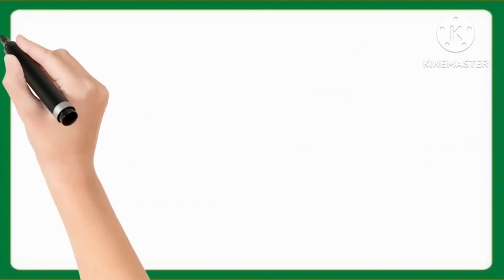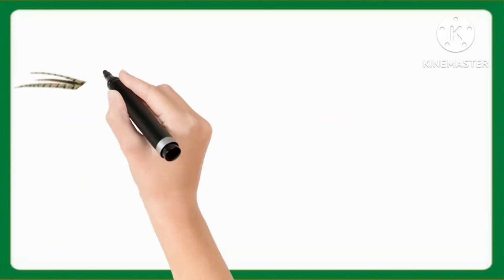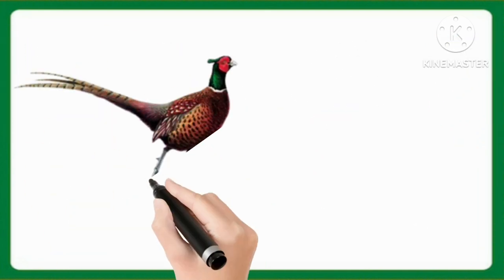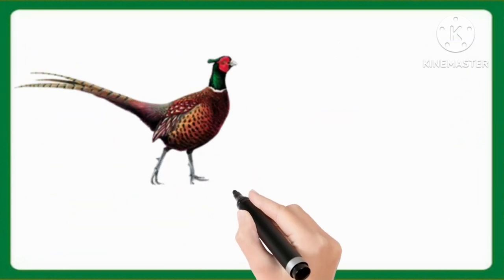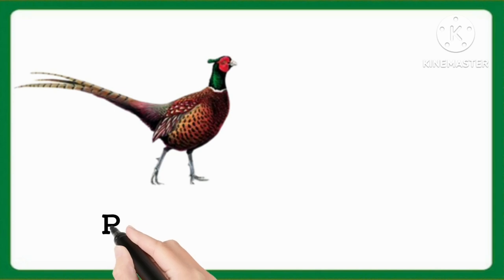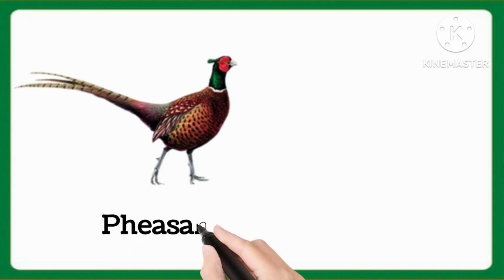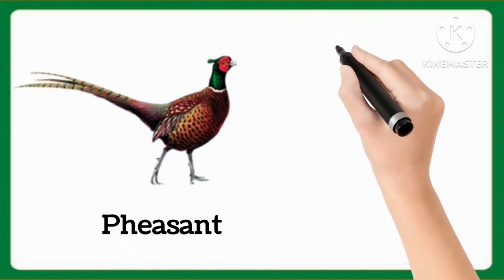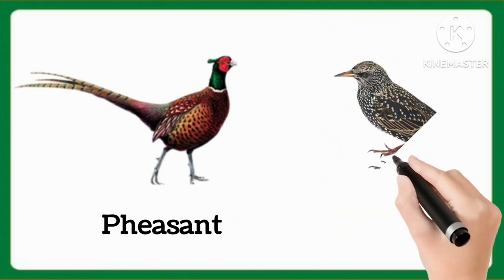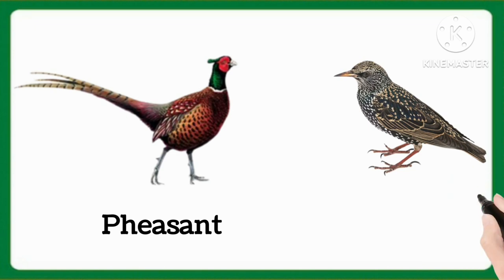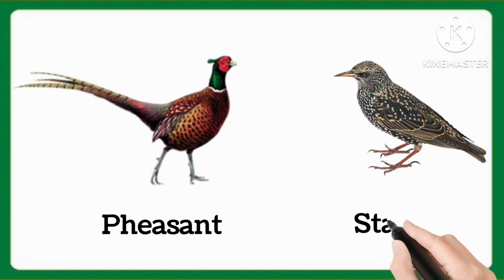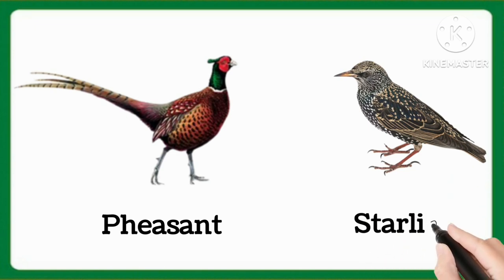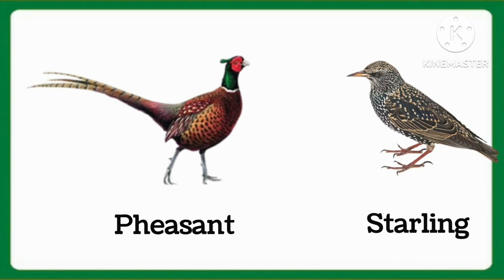And now tell me which word is this, kids? This is pheasant. Pheasant. And which word is this, kids? This is stalling. Starling.